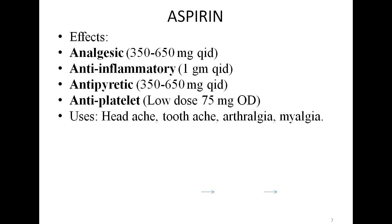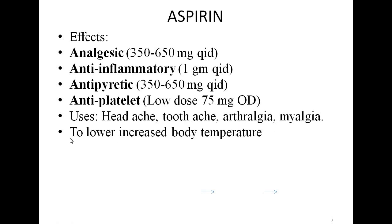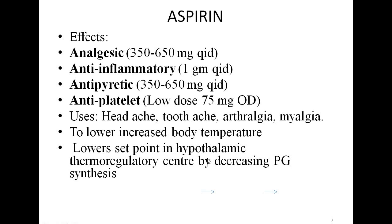Coming to the uses of aspirin: as an analgesic at 350 to 650 mg 4 times a day orally, aspirin is used to relieve headache, toothache, joint pain, and muscle pain. Aspirin is also used to lower increased body temperature. How does aspirin decrease raised body temperature? In the thermoregulatory center of the hypothalamus, whatever the cause of increased body temperature — infection, infestation, or cancer — prostaglandins reset the thermoregulatory center to a higher level. By decreasing prostaglandin synthesis in the hypothalamus, aspirin lowers the set point, thereby decreasing the elevated body temperature.